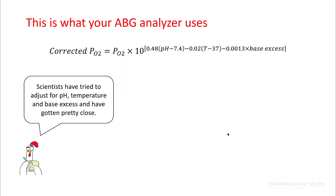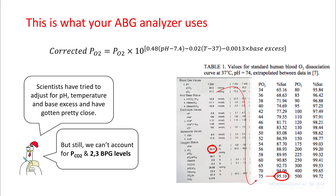Scientists have tried to adjust for pH, temperature, and base excess and have gotten pretty close to a real number. However, they still don't account for the level of PaCO2 and 2,3-BPG. For example, in this ABG, your PO2 is 77, and looking at the standard number, PO2 of 77 should correspond to SaO2 of 95%. However, the machine has corrected for your pH, temperature, and base excess, giving you 92%. So even though these numbers are getting more accurate, they're still far from being the gold standard.